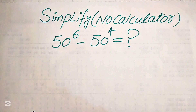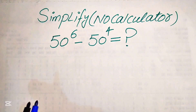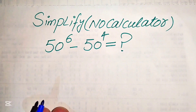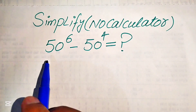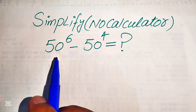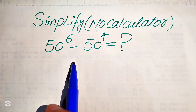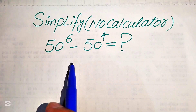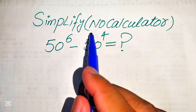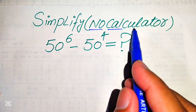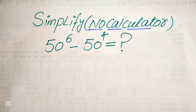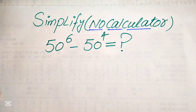Hello everyone, today I want to show you how to simplify this algebraic expression into the lowest form. We have 50 to the power of 6 minus 50 to the power of 4. We will write this algebraic expression in the lowest form, but remember that the calculator is not allowed in this problem, which means we will show all of the working on paper.